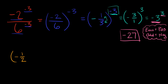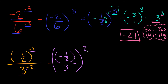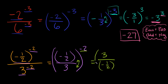For one last example: negative one-half raised to the negative 2, over 3 to the negative 2. Our base is negative one-half over 3, raised to the negative 2 power. Since we have a negative exponent, we can flip the fraction inside: write it as 3 over negative one-half, and raise it to the positive 2 instead.